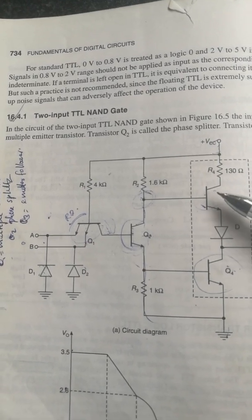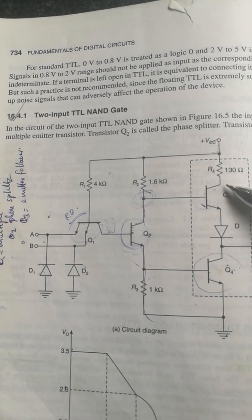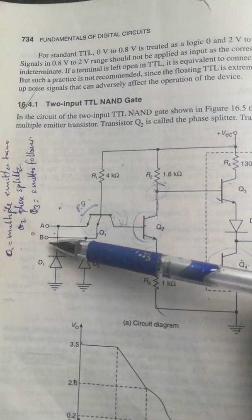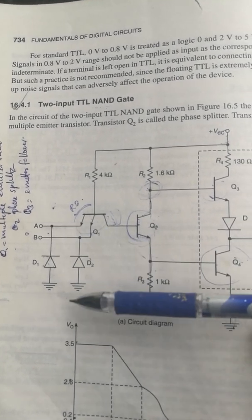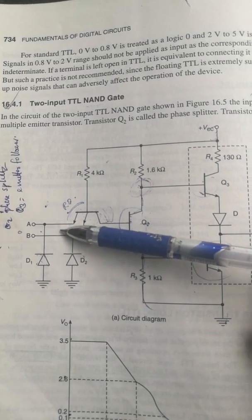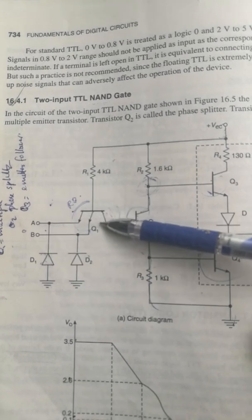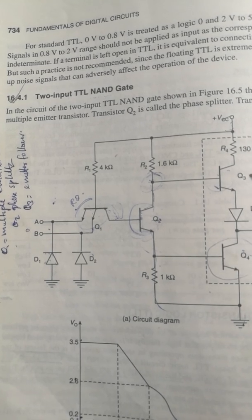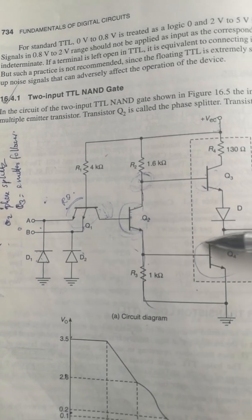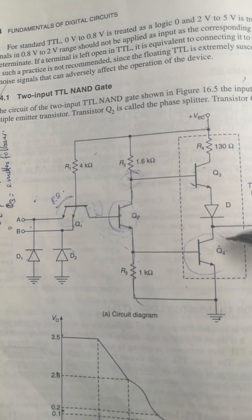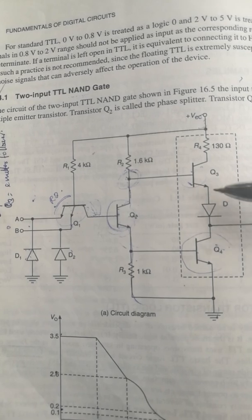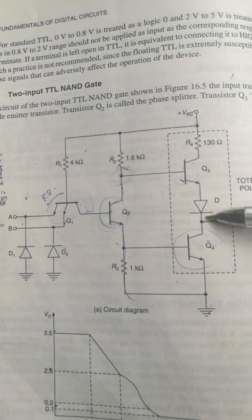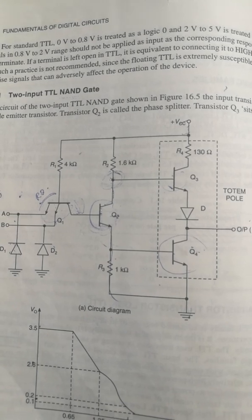This is a 2-input TTL NAND gate. The circuit contains four transistors. In this configuration, Q2 and Q3 are present, with Q3 as emitter connected between Q3 and Q4. The output is taken from this arrangement.